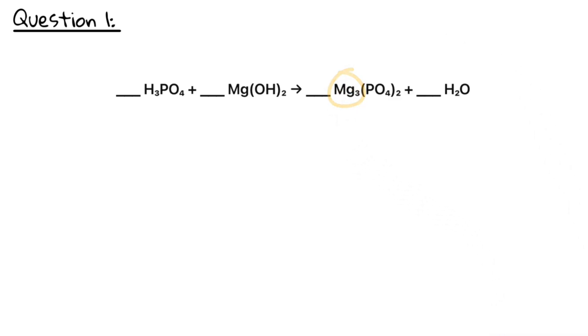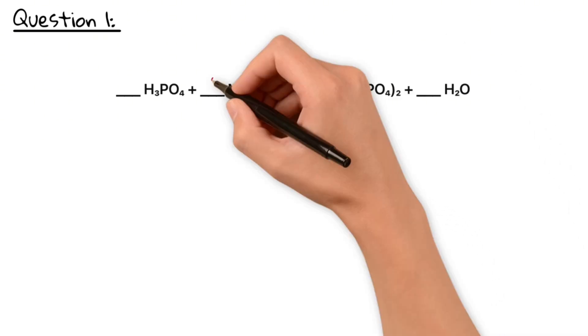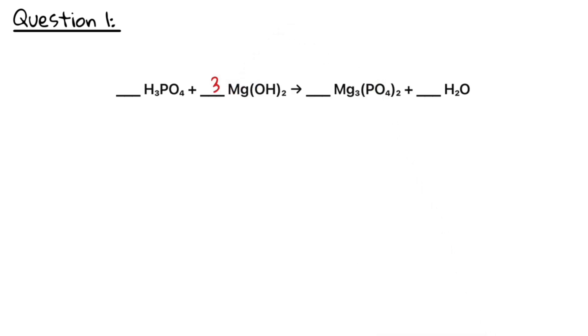Since on the right side we have three magnesium atoms, we need three magnesium hydroxides on the left. The phosphate ion appears twice on the right side, so we need two H3PO4 on the left.